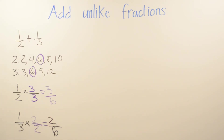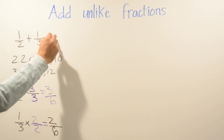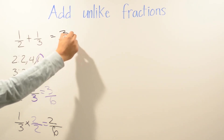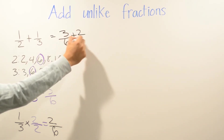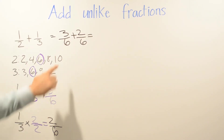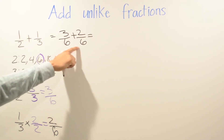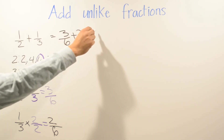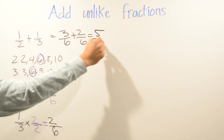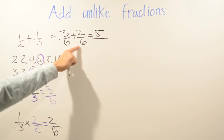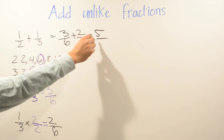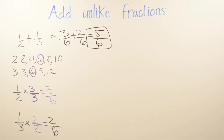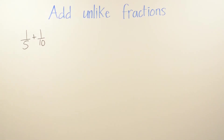Now we have a common denominator of 6, so we can add: 3/6 plus 2/6. We do 3 plus 2 which is 5, and we never change the denominator — we leave it as 6. So the answer for this problem is five over six.